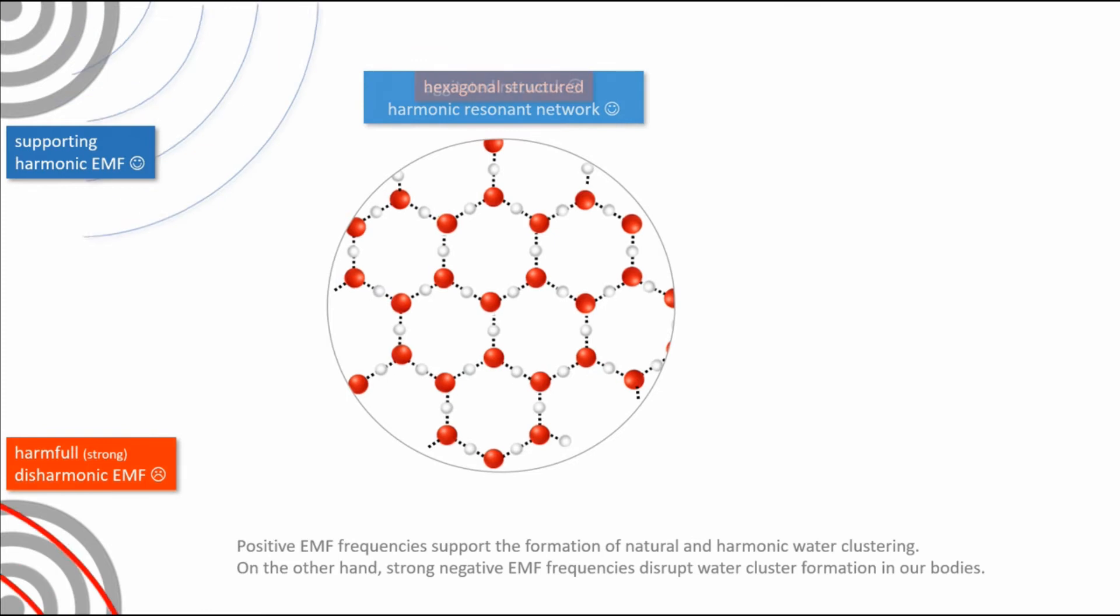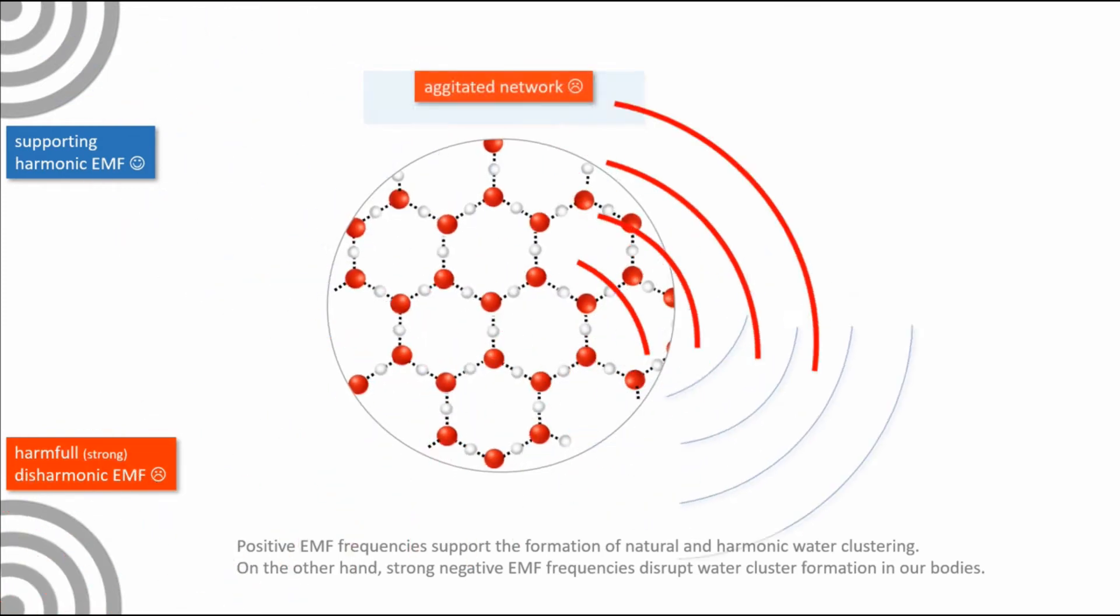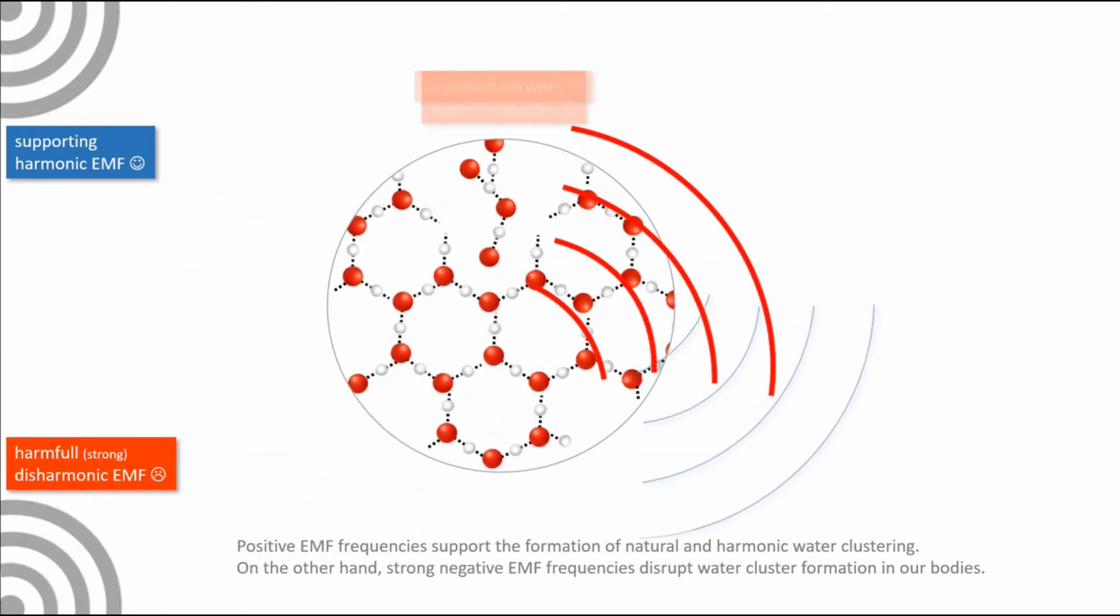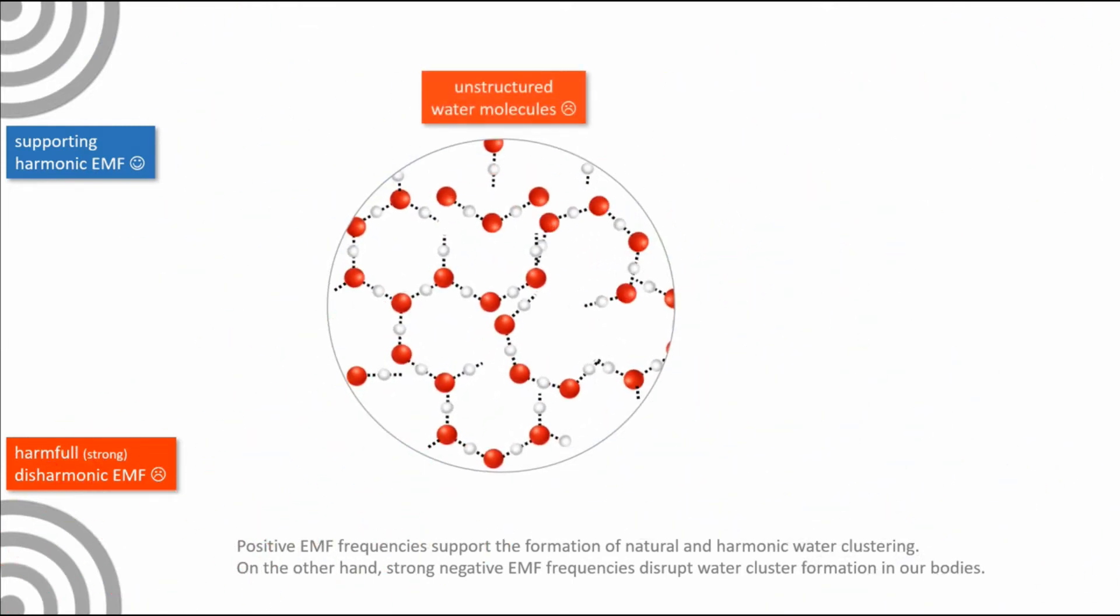Positive EMF frequencies support the formation of natural and harmonic water clustering. On the other hand, strong negative EMF frequencies disrupt water cluster formation in our bodies.